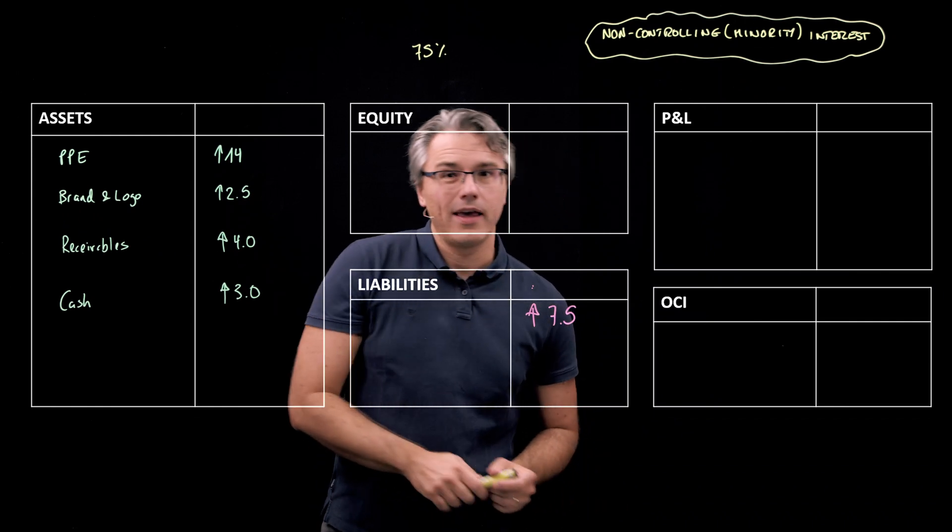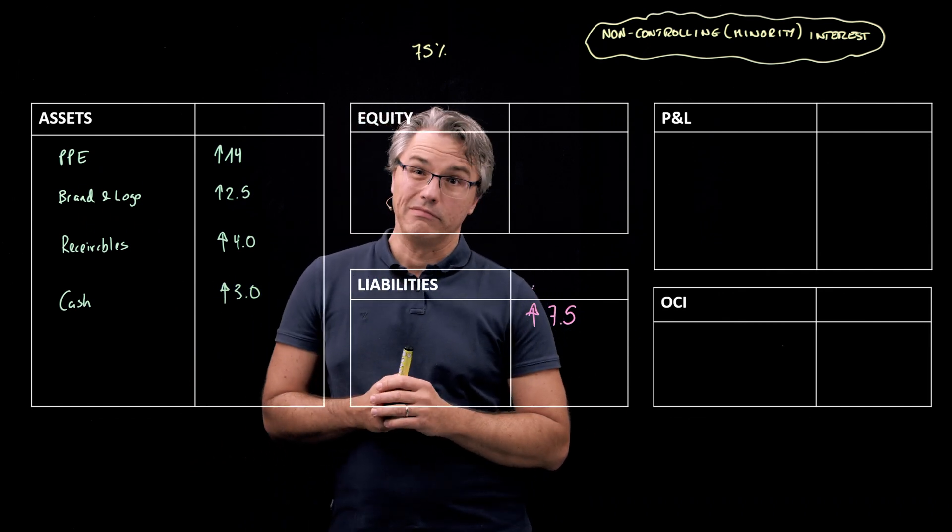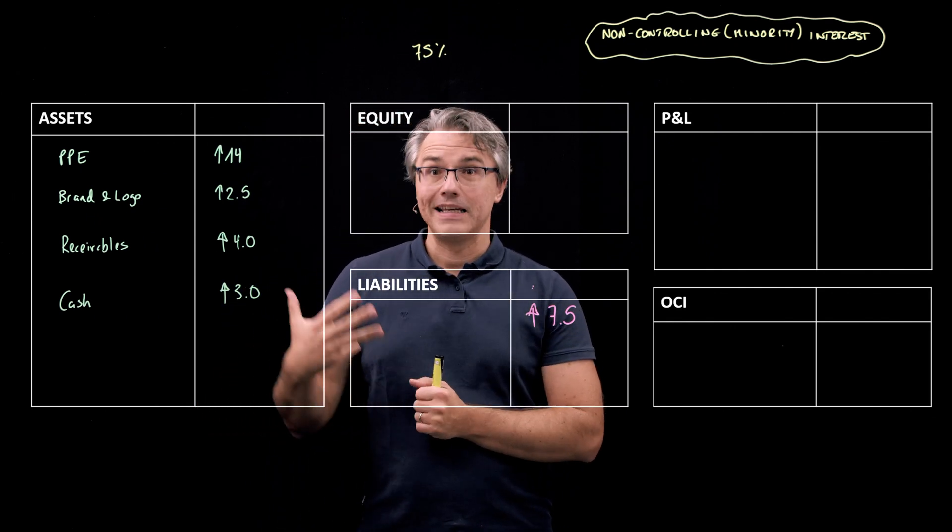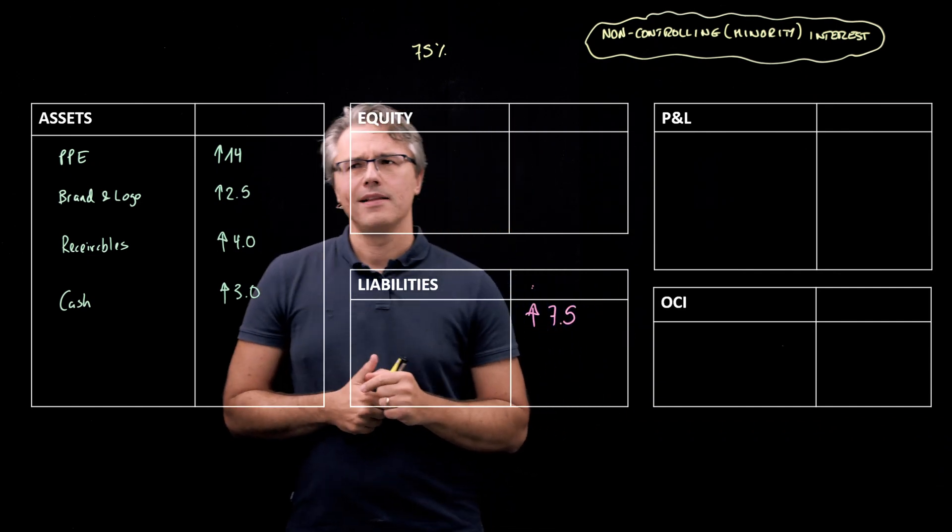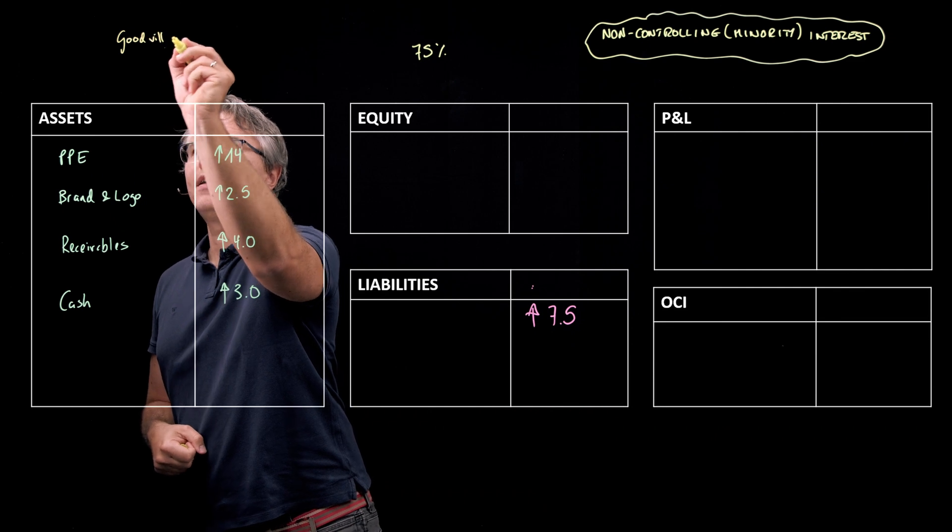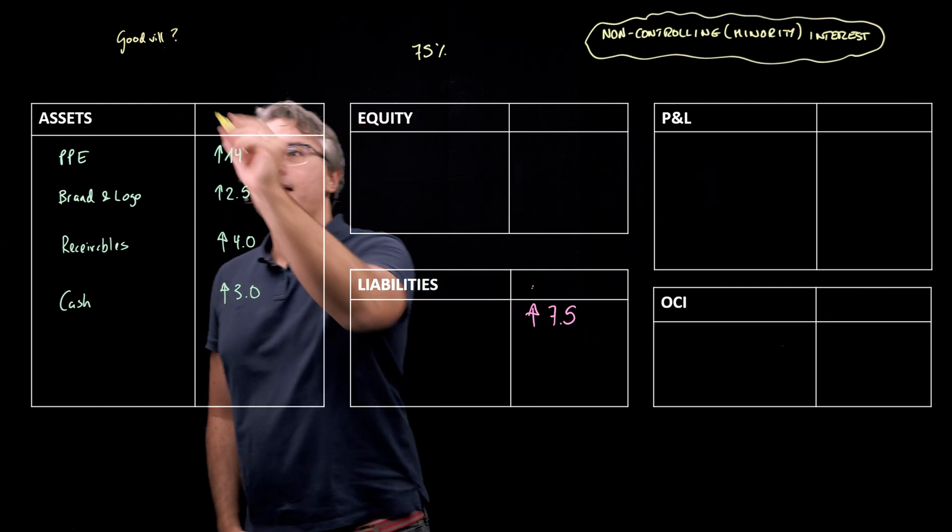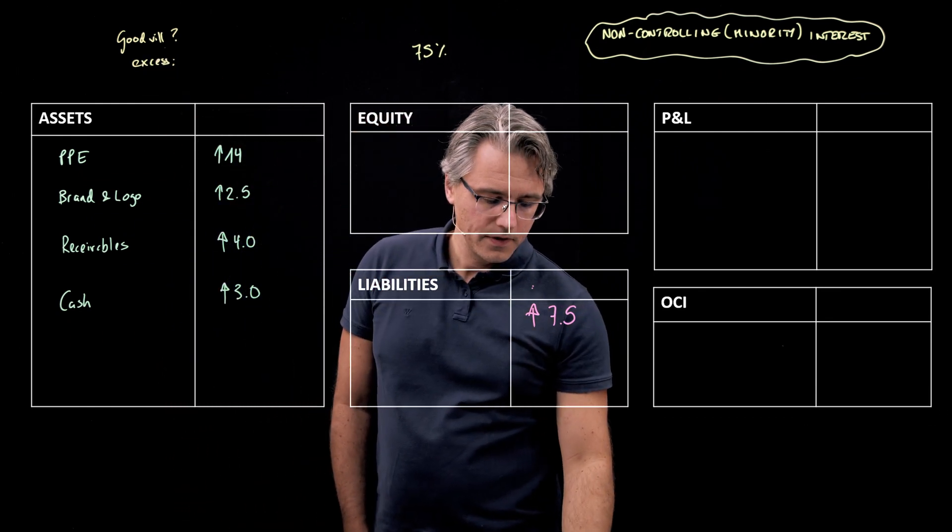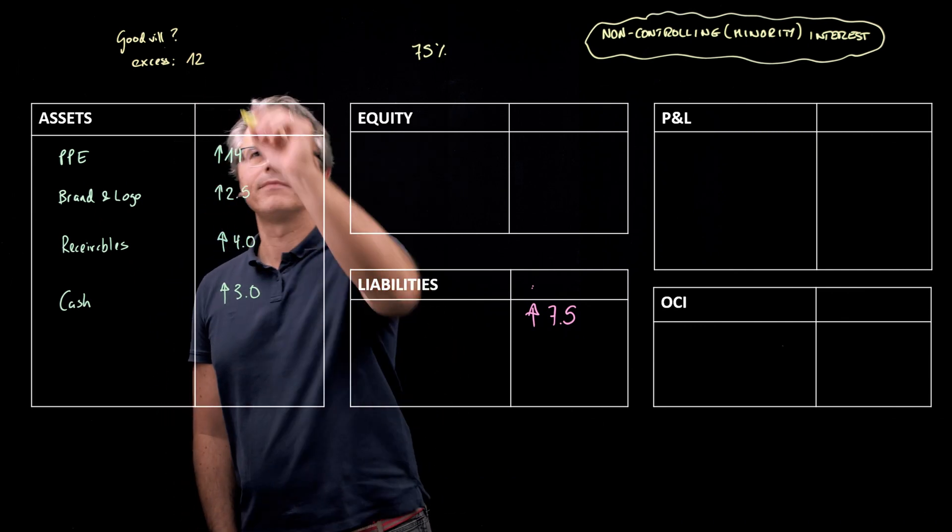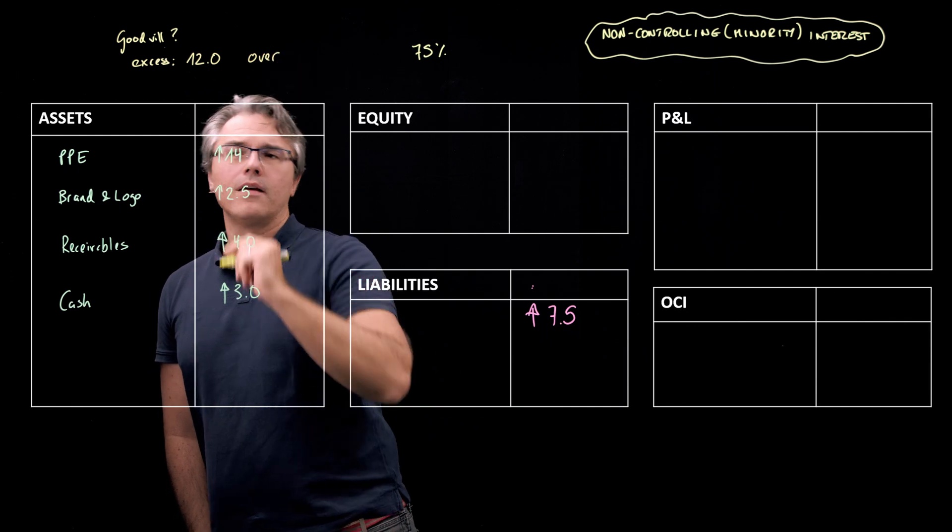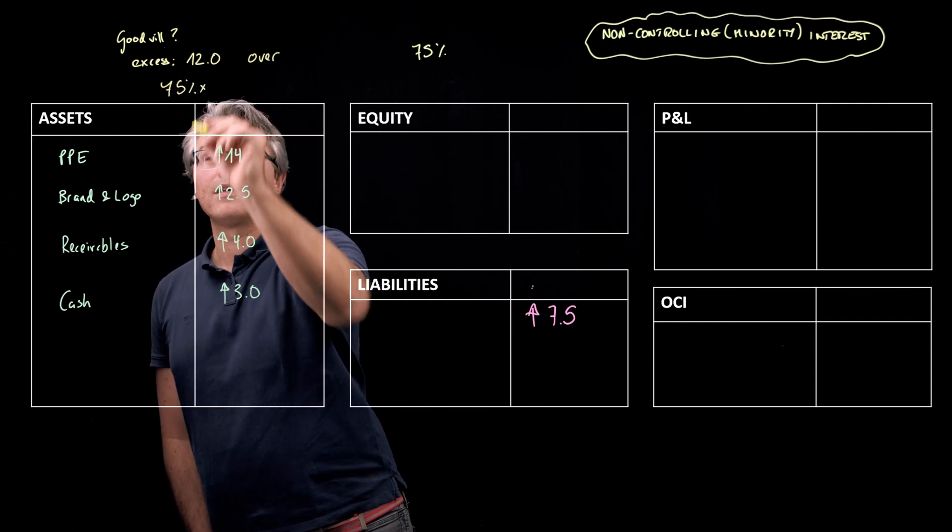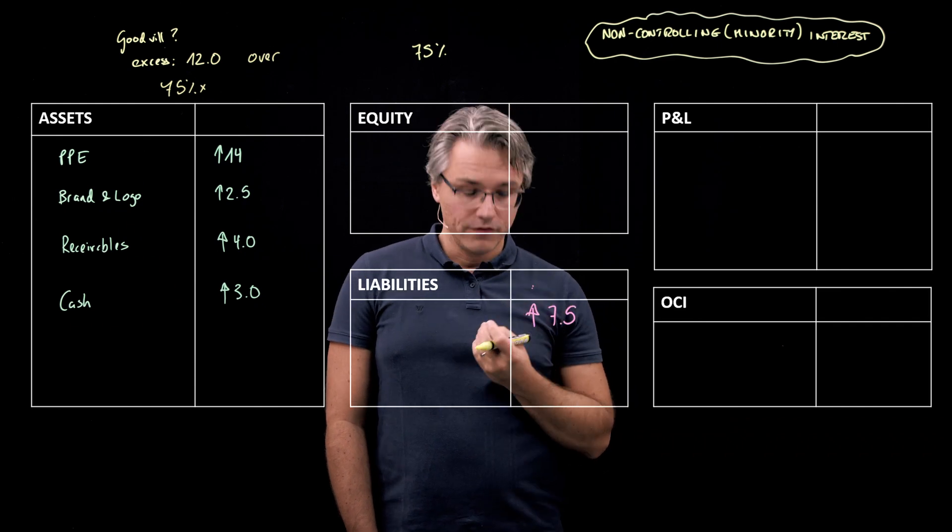Now, I want to check whether possibly in this scenario we're going to have to account for goodwill. And you know what goodwill is from the previous two videos in this series devoted to consolidation topics. Let's just quickly check. Goodwill, let's write it down with a question mark. This was the excess of the purchase price. What's the purchase price in this question? Well, the purchase price is $12 million over our interest. And this time, it's going to be 75% in the fair value of the net assets acquired.